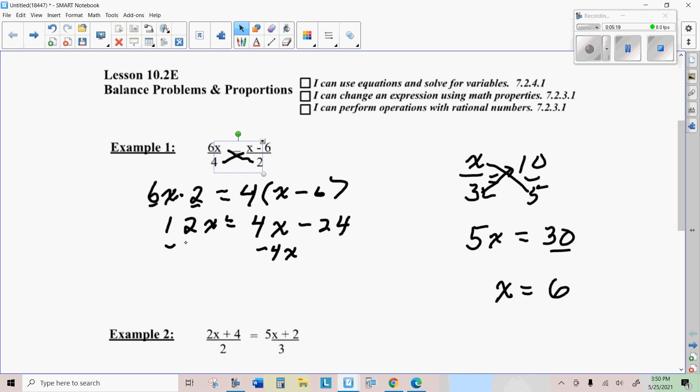And I can just rearrange this and multiply the 6 times the 2 to get 12X there. I'm going to subtract 4X from both sides. Get rid of the X on the right side. That gives me 8X equals negative 24.